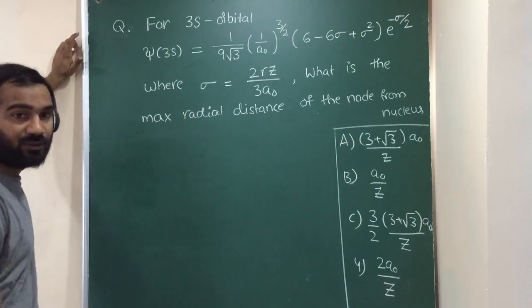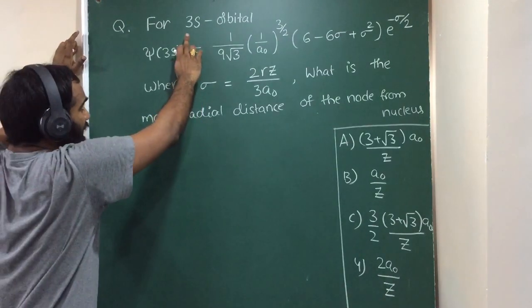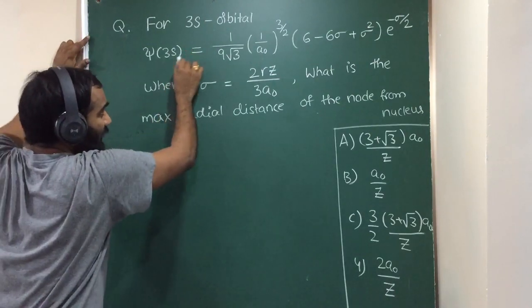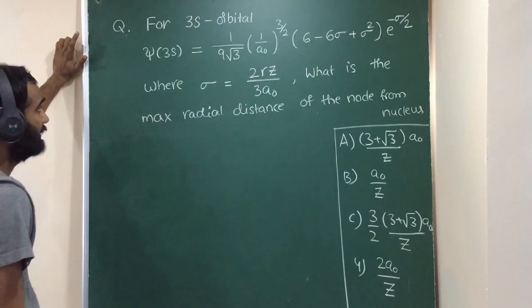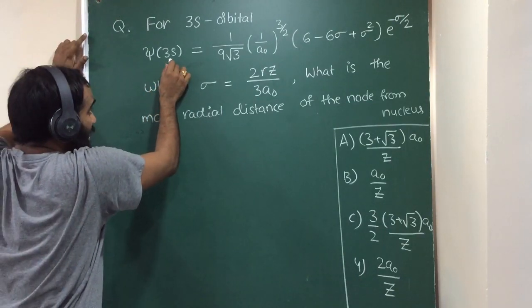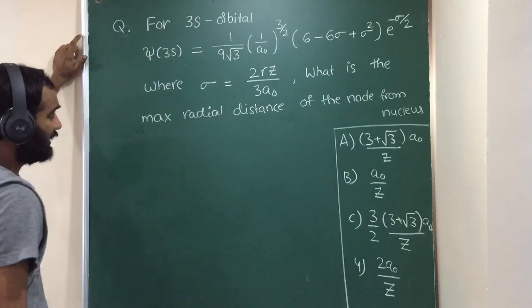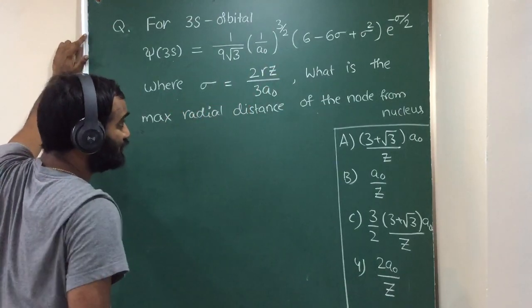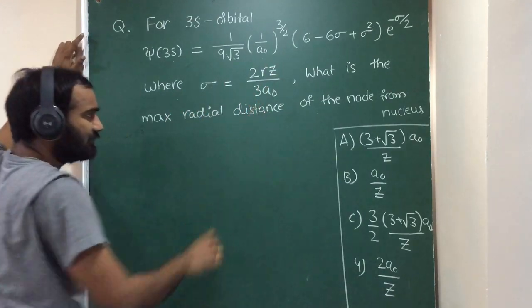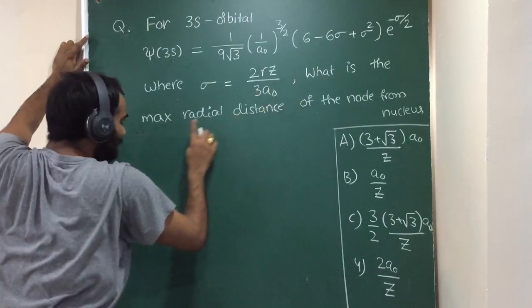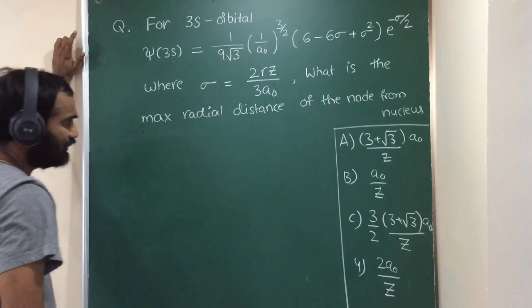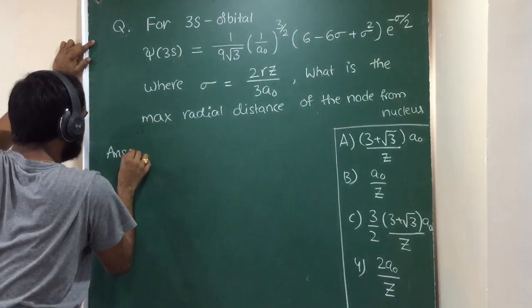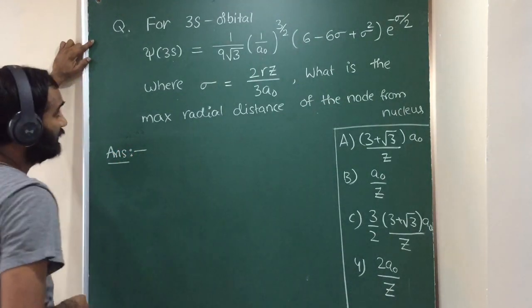Hi students, today we are going to discuss a problem related to the quantum mechanical model of atoms. In this problem, the radial probability function of the 3s orbital is given, where sigma equals 2rz by 3a0. What is the maximum radial distance of the node from the nucleus?